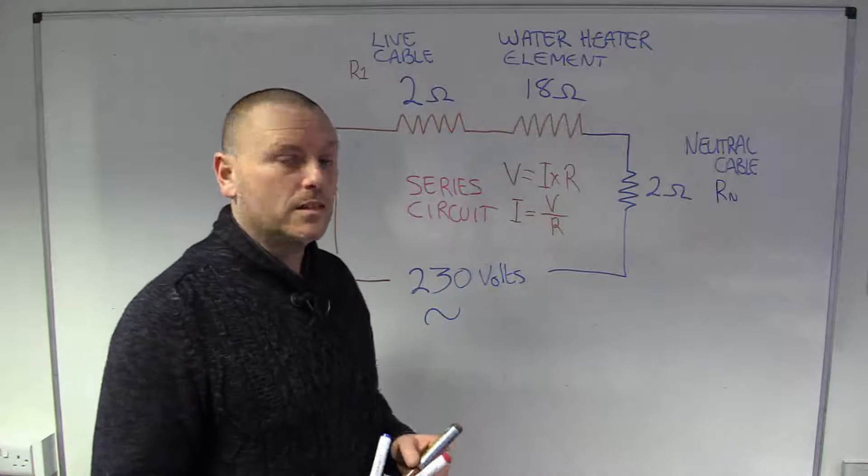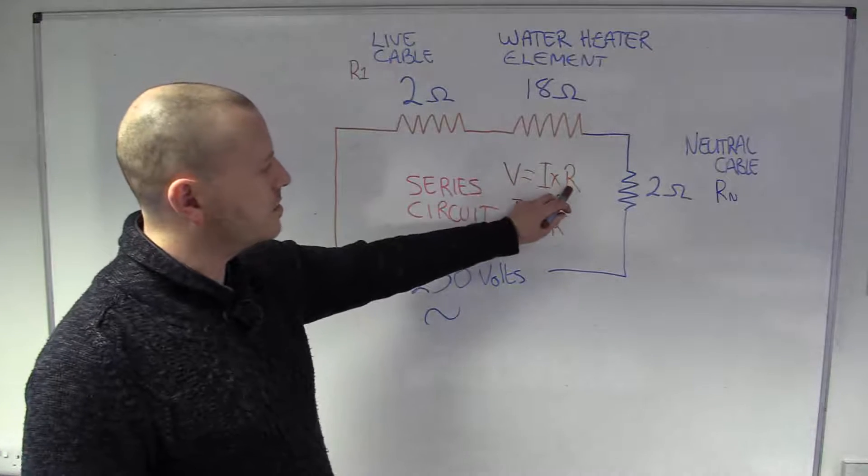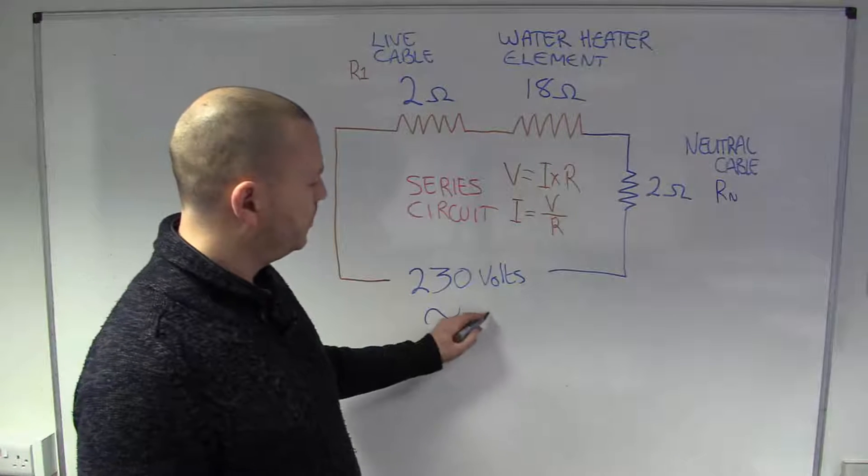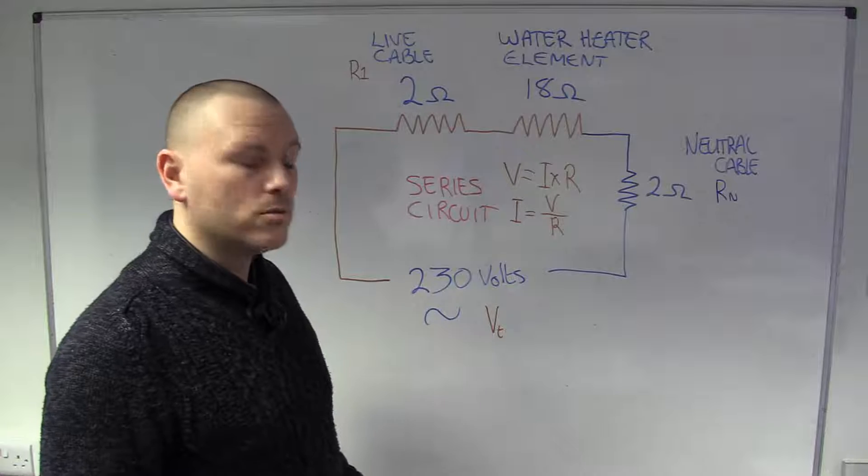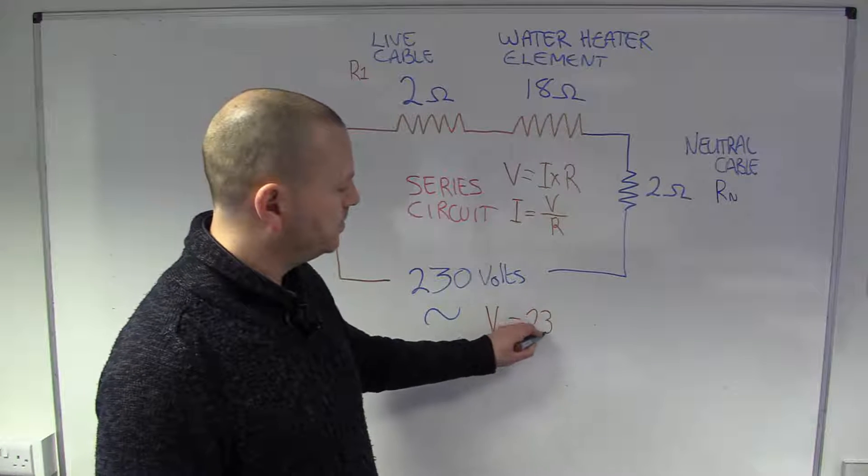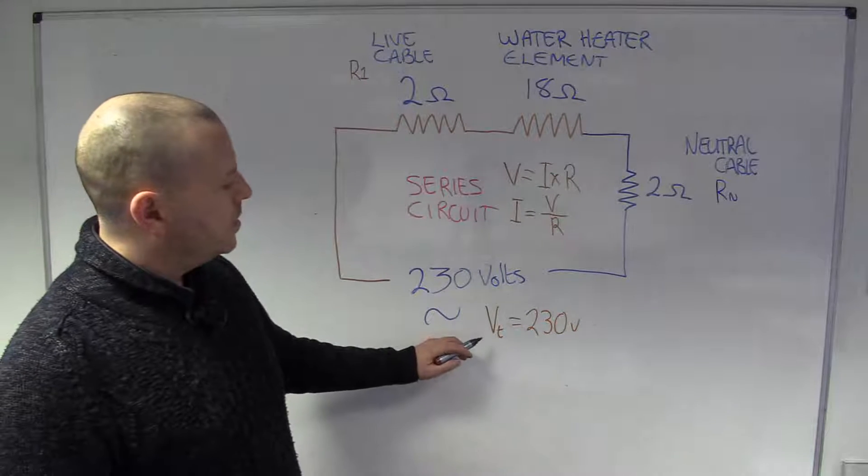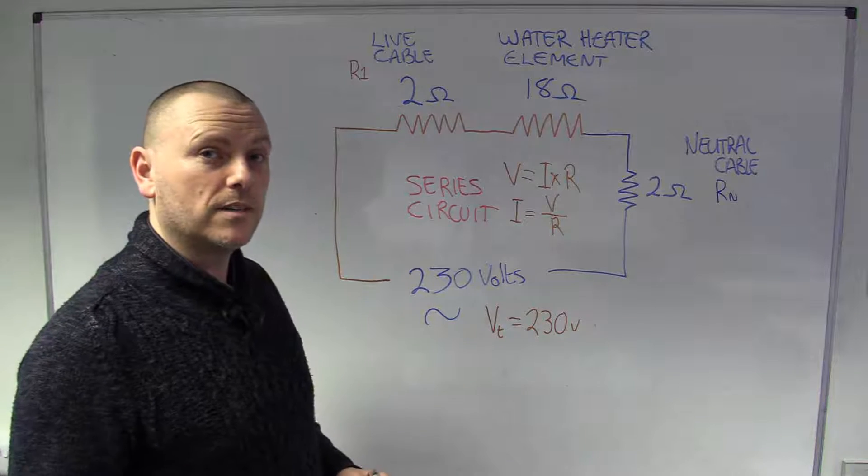Now, the first thing we're going to have to do is work out what our total resistance is. We've got our total volts. So, I'm going to call that Vt, Vtotal. That's 230 volts. Got that. The current, we don't know yet. But we can work it out if we can work out the resistance.